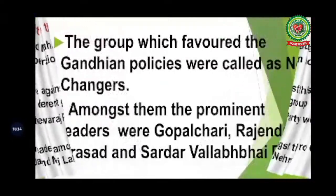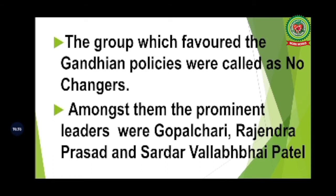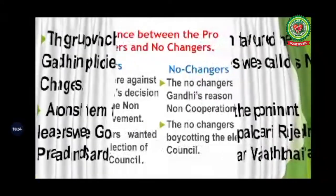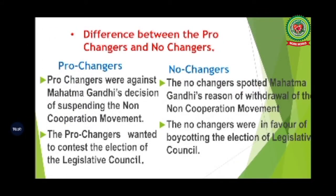The group which favored Gandhian policies were called No-Changers — among them the prominent leaders were Gopal Chari, Rajendra Prasad and Sardar Vallabhbhai Patel. The basic difference: Pro-Changers were against Gandhi's decision to suspend the Non-Cooperation Movement and wanted to contest elections to the Legislative Council, believing you had to be part of the government to change it. No-Changers supported Gandhi's withdrawal and favored boycotting the Legislative Council elections.